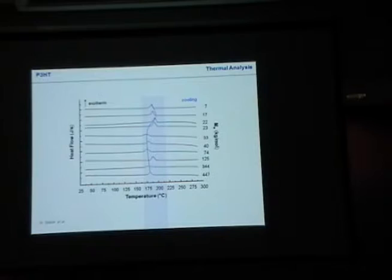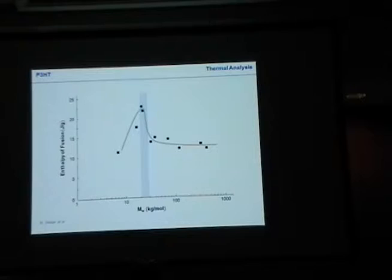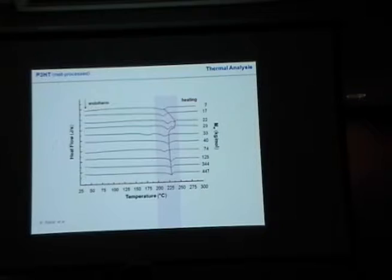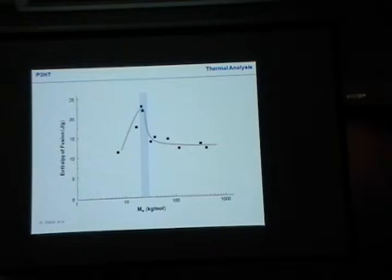This transition again occurs in the molecular weight regime between 20 and 30 kilogram per mole. With these very simple experiments — you need possibly three milligrams per sample — you immediately can figure out where this transition occurs. And we can go further. Something we often do with thermal analysis: we take what is called the enthalpy of fusion — the area underneath the melting temperature peak.